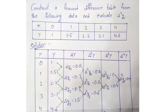Next, we compute the delta squared y values. Delta squared y0 = delta y1 minus delta y0 = 0.7 minus 0.5 = 0.2. Delta squared y1 = delta y2 minus delta y1 = 0.9 minus 0.7 = 0.2. Delta squared y2 = delta y3 minus delta y2 = 1.5 minus 0.9 = 0.6. So the delta squared y values are 0.2, 0.2, and 0.6.